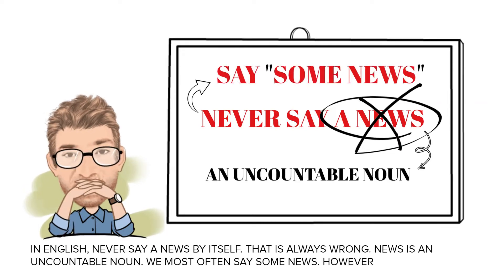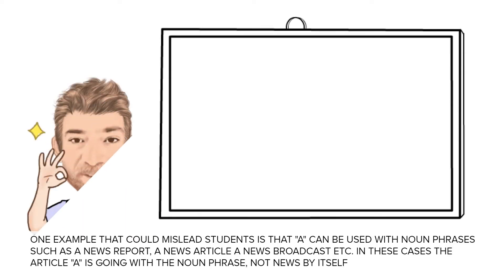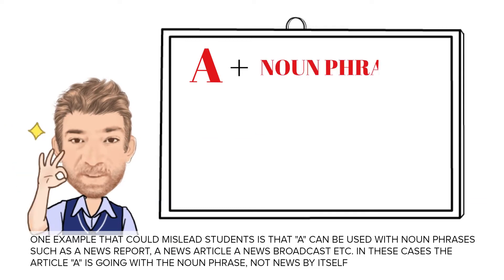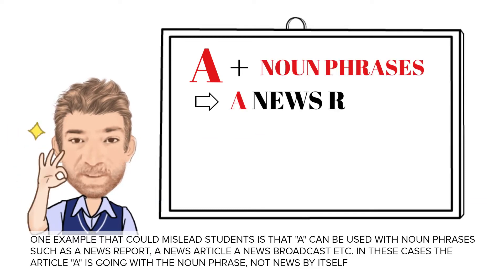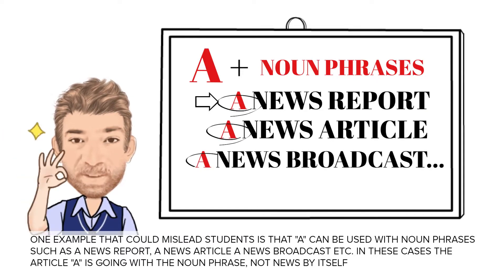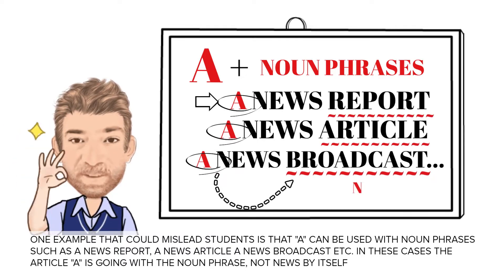However, one example that could mislead students is that 'a' can be used with noun phrases such as 'a news report,' 'a news article,' 'a news broadcast,' etc. In these cases, the article 'a' is going with the noun phrase, not 'news' by itself.